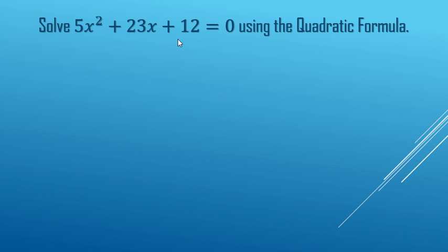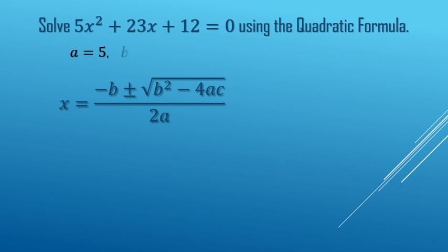All right, we are going to solve this quadratic equation using the quadratic formula, which is negative b plus or minus the square root of b squared minus 4ac all over 2a, where the a, the b, and the c are the coefficients here.